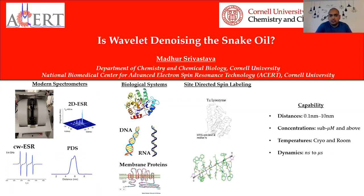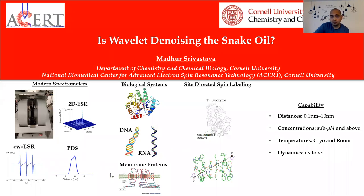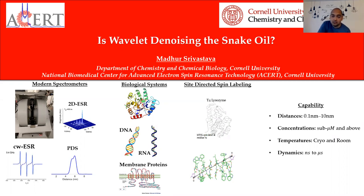Let's look at the current state of the art. We have modern spectrometers where we can do CW ESR, pulse dipolar spectroscopy, and 2D ESR, studying both dynamics and structure for a wide range of conditions. We have biological systems ready to be studied, and site-directed spin labeling to study them. Collectively, we can measure distances from 0.1 to 10 nanometers, go as low as micromolar concentrations, study things in cryo and at room temperature, and study dynamics from nanosecond to microsecond scales. So we are doing pretty well.